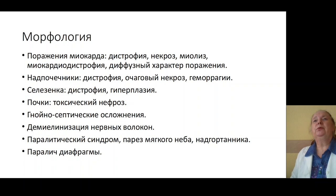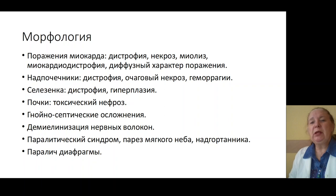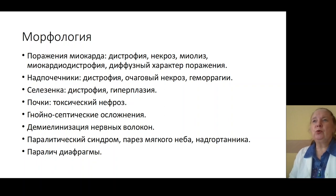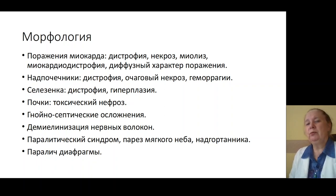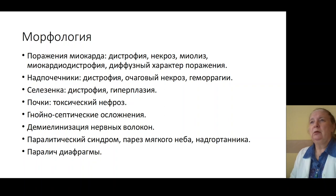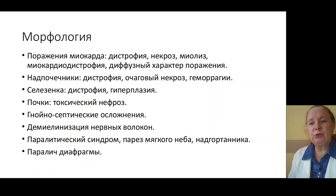Causes of death include toxic shock, disseminated hemorrhagic syndrome, polyorganic insufficiency, cardiovascular insufficiency, renal insufficiency, and respiratory insufficiency. In hypertoxic forms, it causes adrenal insufficiency and disseminated hemorrhagic syndrome. Cause of death is also croup syndrome, block and edema of the respiratory system, and obstructive variants of respiratory insufficiency.